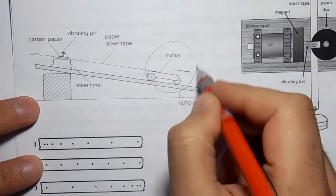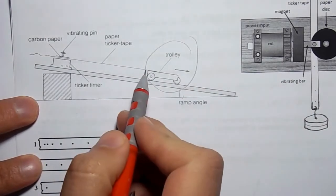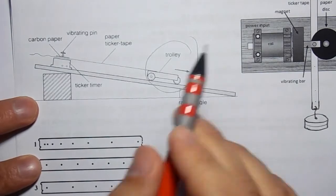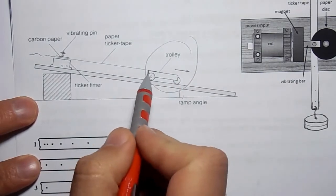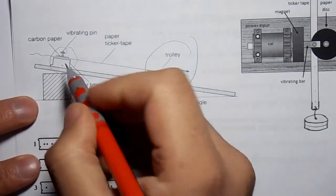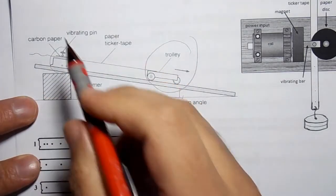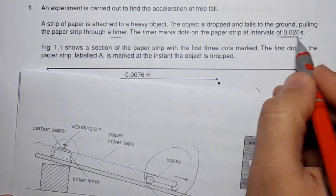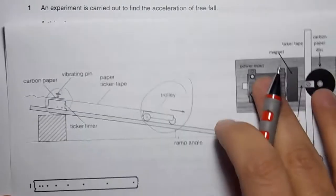For example, to know the speed of a trolley. The ticker tape makes markers at equal time intervals. It should be 0.02 seconds, as stated in the problem.